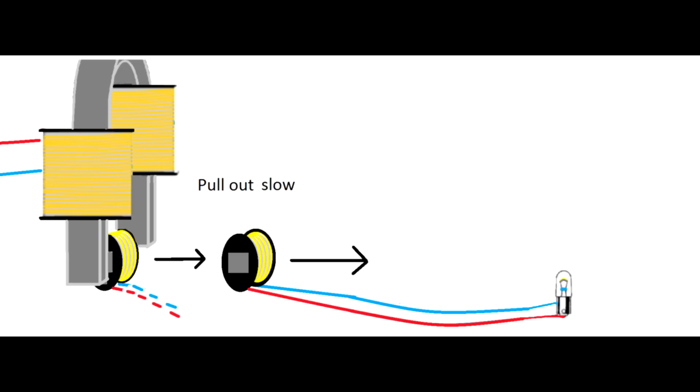Put the coil in slowly and take it out slowly. Then you will have no light. That will show to make magnetic current the time is important.